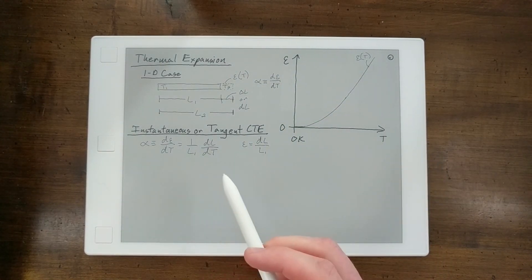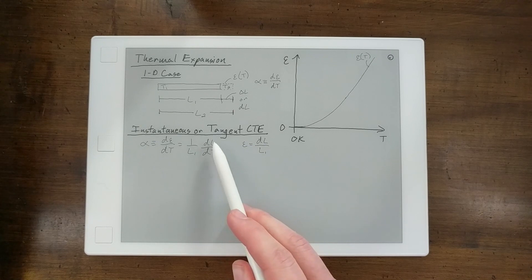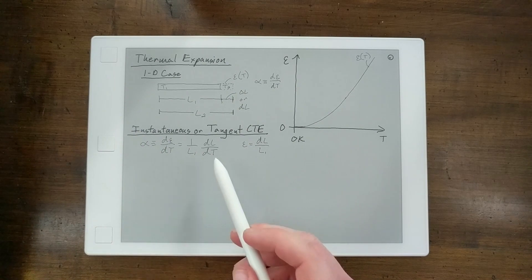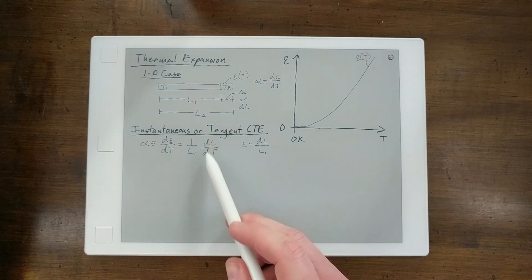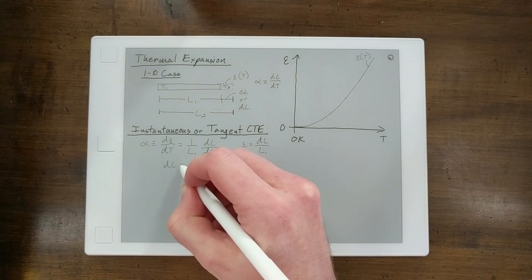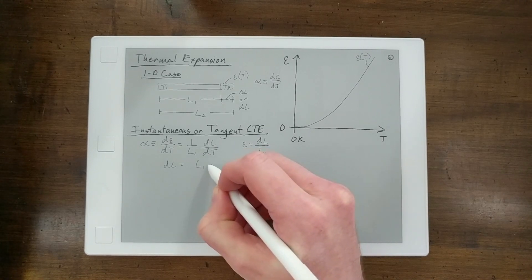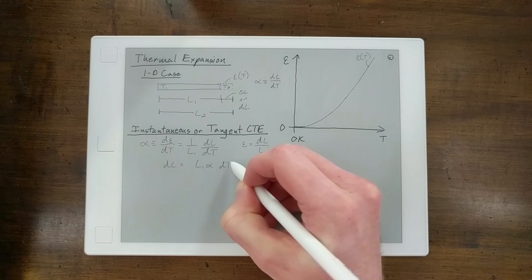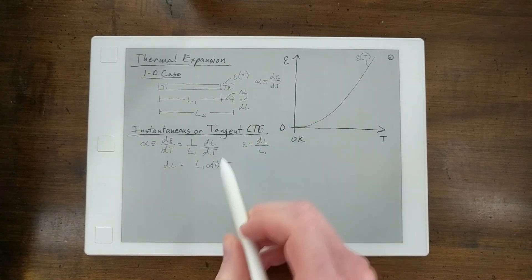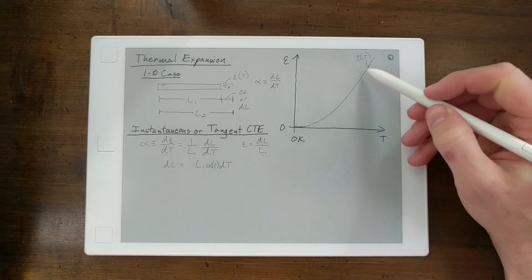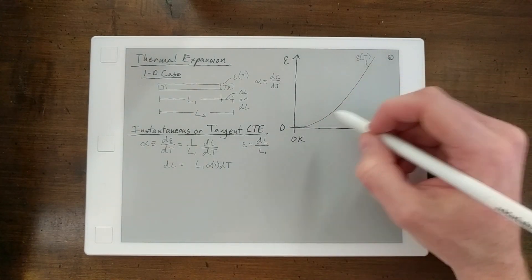And if we rearrange it and want to determine, okay, if I have a component of a certain length, how will it change for every incremental change in temperature? You rearrange this equation, and you get DL is equal to L1 alpha DT. Now alpha is a function of temperature in this instance.